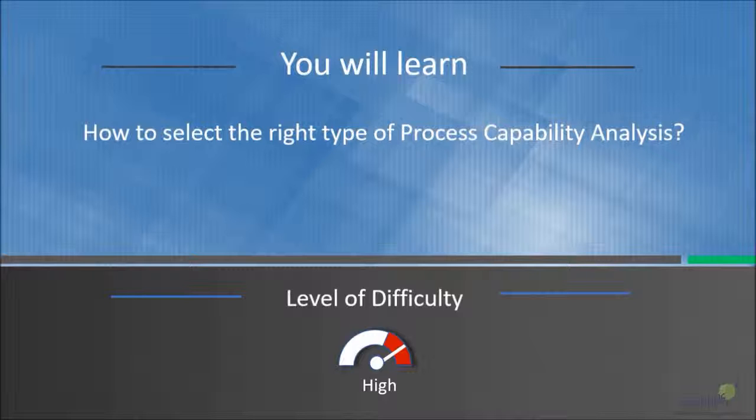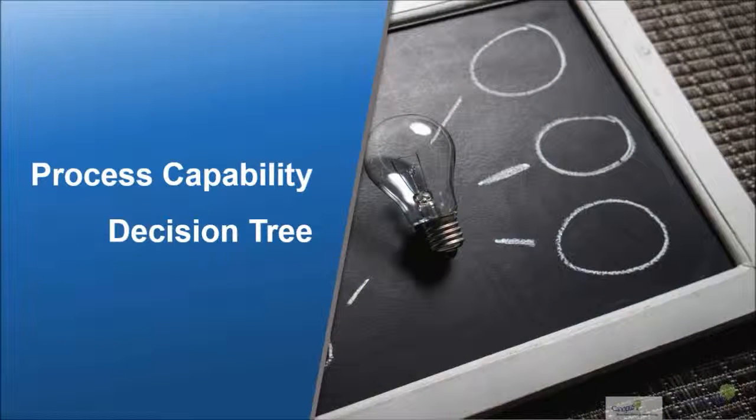In this lecture we're going to talk about how to select the right type of process capability analysis. As you perform the process capability analysis, you might realize that there are different scenarios: the data is normal, it's not normal, and so on. In such scenarios we need a decision tree which can help us in taking the right decisions regarding the selection of process capability analysis, and that's what we're going to see today.